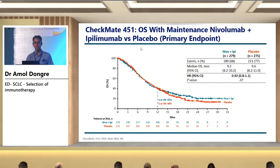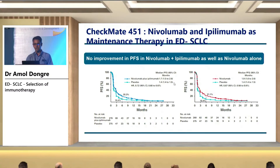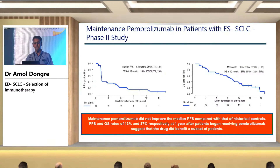Looking at the Kaplan-Meier survival curves for CheckMate 451, there is no definite benefit. The median OS is around 9.2 months with nivolumab plus ipilimumab versus 9.6 months with placebo. There is no improvement in overall survival with nivolumab plus ipilimumab or nivolumab alone, and no improvement in PFS either. Similarly, maintenance pembrolizumab in extensive stage SCLC — a phase 2 study — suggests it did not improve median PFS compared to historical controls, though PFS and OS rates of 13% and 37% respectively at one year suggest the drug did benefit a subset of patients.